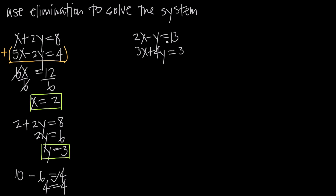Let's do another example. We have the system 2x minus y equals 13 and 3x plus 4y equals 3. In this case it's not as simple, because if we add our equations together, we get 2x plus 3x is 5x, negative y plus 4y is a positive 3y, and 13 plus 3 is 16 — so addition wouldn't eliminate anything.